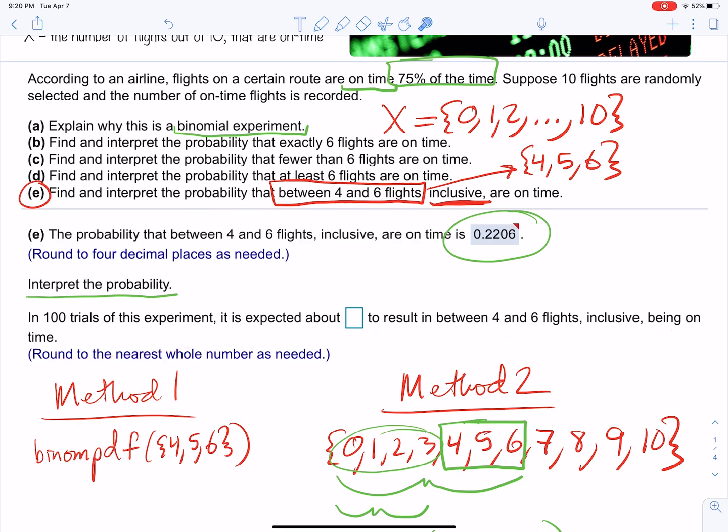In 100 trials of this experiment, it is expected about 22 to result in between four and six flights, inclusive, being on time. In other words, 22 out of 100 times you're going to get between four and six flights that are on time. Alright, so there's a 22% chance that you'll get between four and six flights that are on time if you randomly select 10 flights. Alright, that's it.